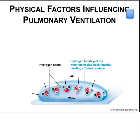Alveolar surface tension is another physical factor affecting ventilation. The alveoli are covered with a thin film of liquid, mainly water. The gas-water boundary exists within each alveolus where water molecules hydrogen bond with each other. The gases are non-polar molecules and therefore do not form hydrogen bonds, creating surface tension at the gas-water boundary, which is at its greatest when the alveoli are at their smallest diameter during expiration.